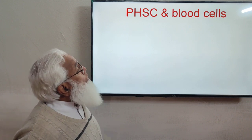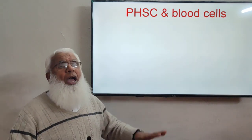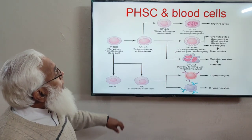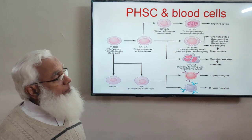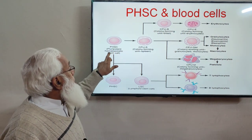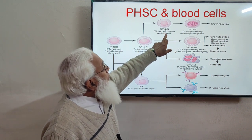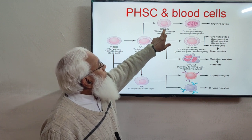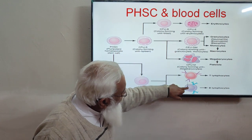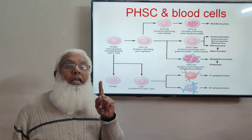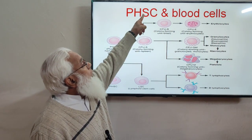PHSC stands for pluripotential hemopoietic stem cell — the main cell responsible for the formation of all formed elements of the blood, including RBCs, WBCs, and platelets. When it differentiates into the colony-forming unit erythroid (CFUE), it is committed to the erythroid series for the formation of RBCs. All formed elements of the blood are derived from this pluripotent hemopoietic stem cell.